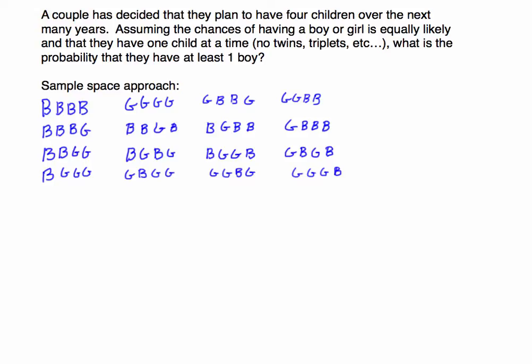In this video I'm going to discuss one of the most complicated topics in probability that students tend to struggle with — calculating probability when we're asked to find 'at least one' something. Here we're told a couple plans to have four children. We assume a 50/50 chance for boy or girl, a probability of 0.5 for each, and that they have one child at a time — no twins, triplets, etc. We want to know the probability that they have at least one boy.